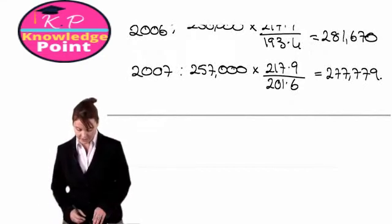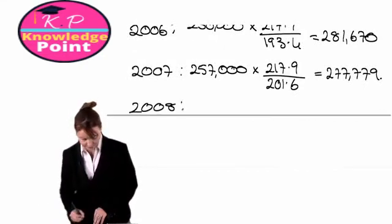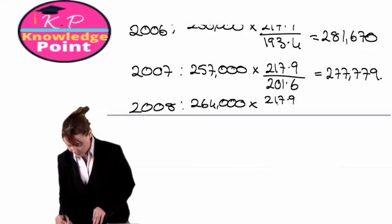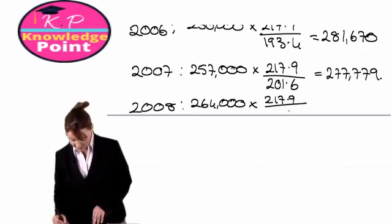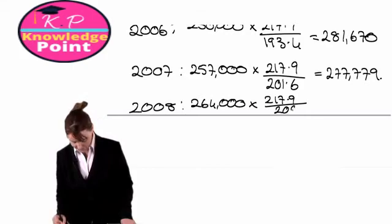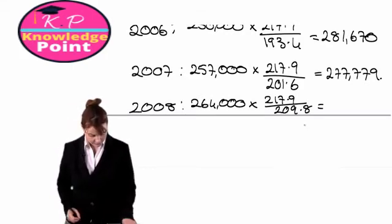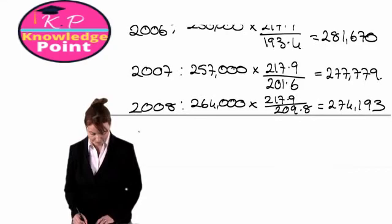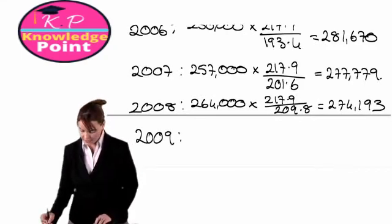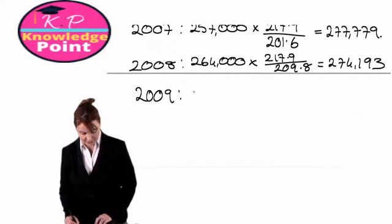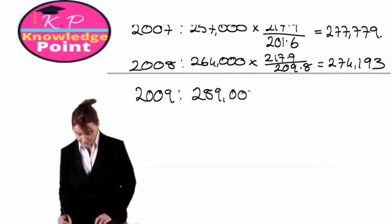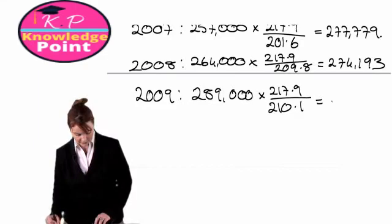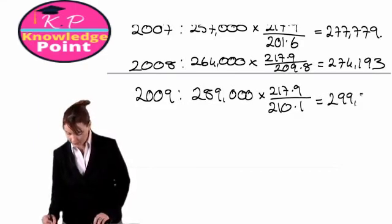Our adjusted sales for 2008: actual sales of 264,000 multiplied by our RPI for 2010, divided by our RPI for 2008, gives us 274,193. Finally, in 2009, our adjusted revenue will be 289,000 multiplied by 217.9, divided by 210.1, which gives us 299,729.